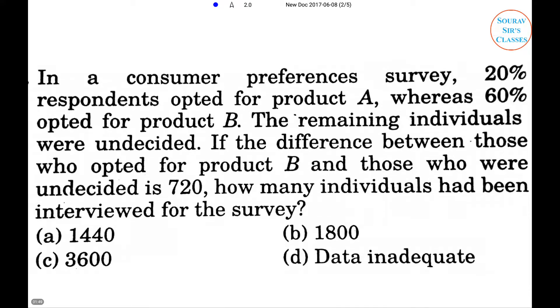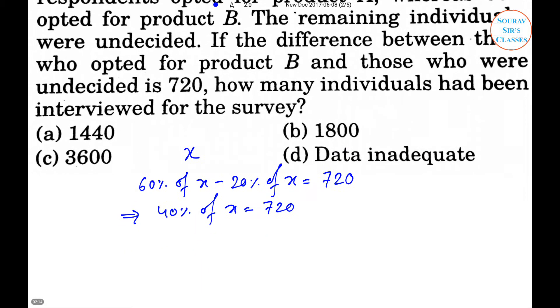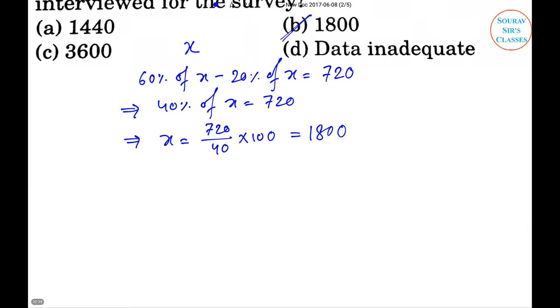Solution: Let the number of individuals be x. Then according to the question, 60% of x minus 20% of x equals 720. That means 40% of x equals 720. So x equals 720 by 40 multiplied by 100, which equals 1800. So option B will be the right answer.